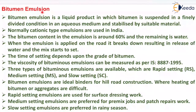Next is bitumen emulsion. Bitumen emulsion is a liquid product in which bitumen is suspended in a finely divided condition in an aqueous medium and stabilized by suitable material. Normally, cationic type emulsions are used in India. The bitumen content in the emulsion is around 60% and the remaining is water. When the emulsion is applied on the road, it breaks down resulting in release of water and the mix starts to set. The time of setting depends upon the grade of bitumen. The viscosity of bituminous emulsion can be measured as per Indian Standard IS 8887:1995.